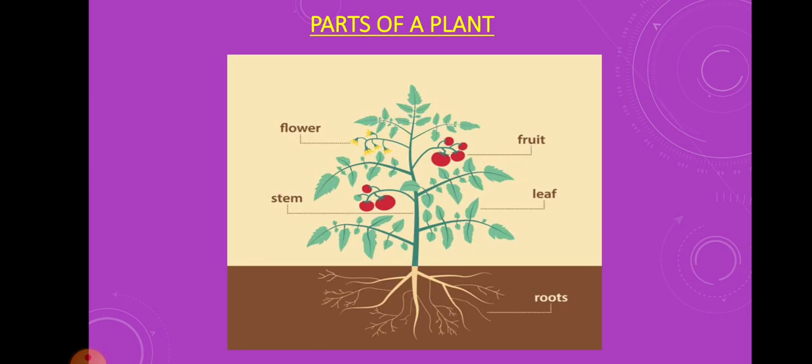Students, you all know that plants are very important for us. They give us many useful things like food, clothes, wood, medicines, etc. Most of the food that we eat comes from plants like vegetables, fruits, cereals, pulses, etc.